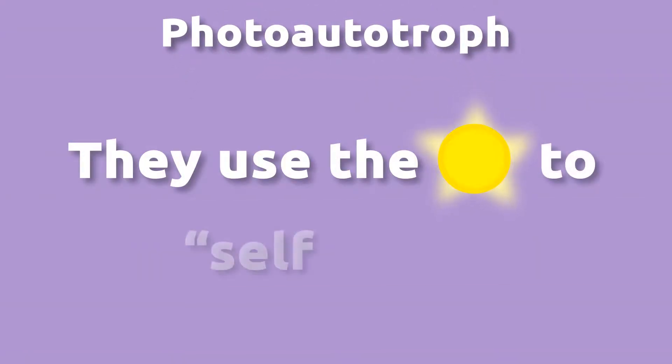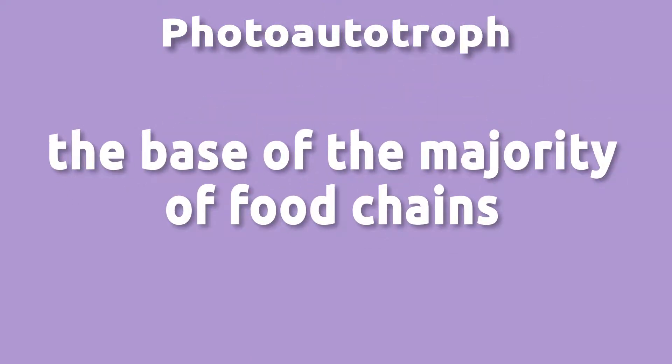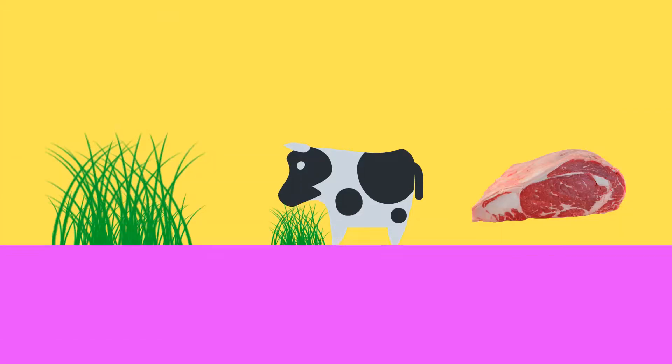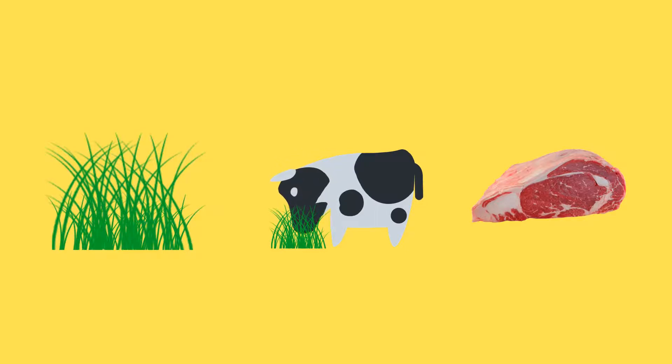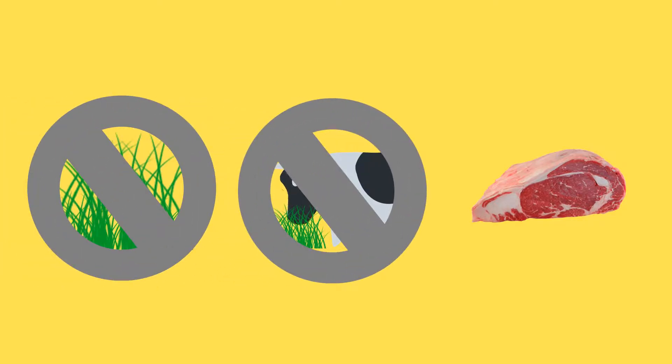Plants are called photoautotrophs because they use the sun to self-feed — in other words, they make their own food. Photoautotrophs are the base of the majority of food chains, which means we are dependent on plants. Without plants, we would not have a food source. What about steak? Well, no grass, no cows, no steak.